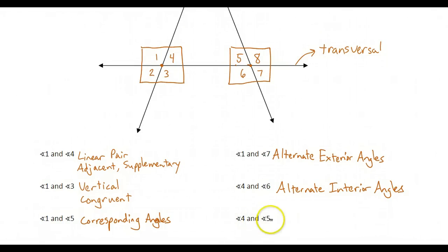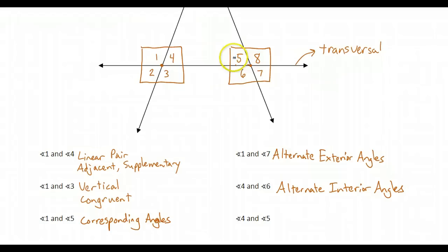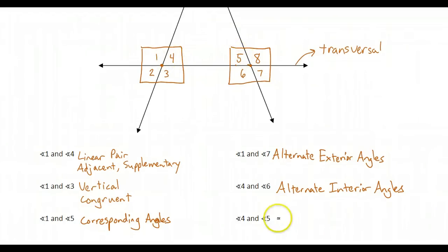Angles four and five are both between the two lines, but they're on the same side of the transversal — four is above and five is above. They go one right after the other. Four and five are consecutive interior angles.